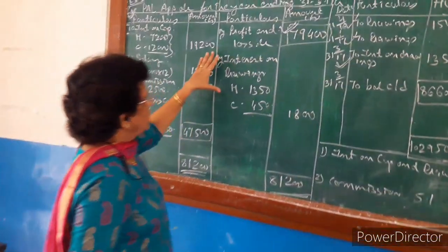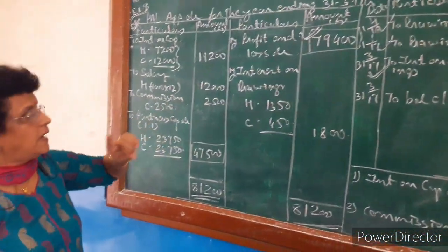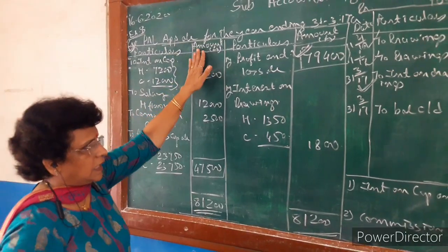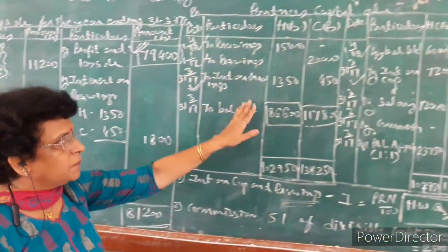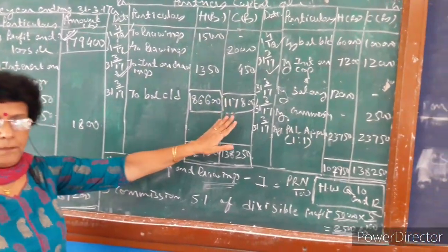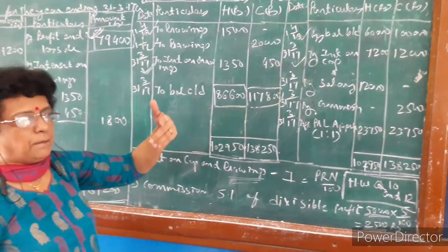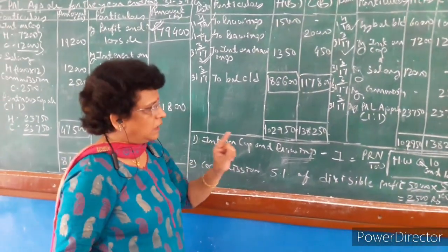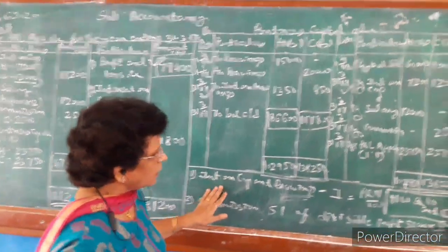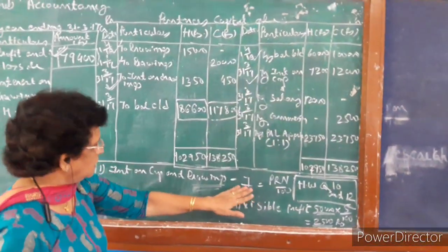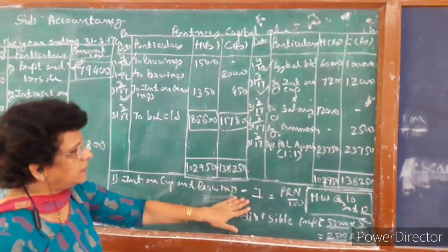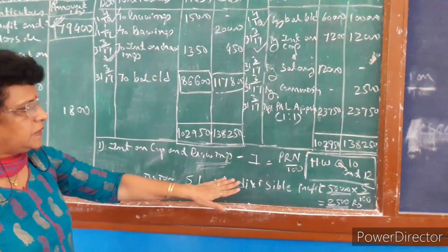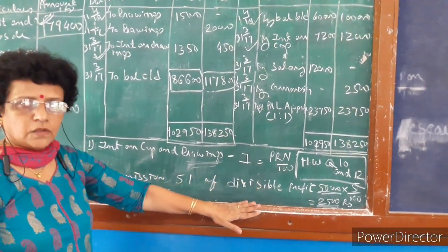So, this is how today we have done the first example, in which both the appropriation account and the capital account are prepared, which is going to be a part of your partnership final accounts. I hope you all have understood how the interest on capital as well as commission is to be calculated.